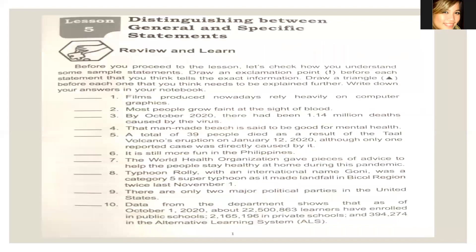Let's go to the next page. We are now in lesson five: distinguishing between general and specific statement. Before you proceed to the lesson, let's check how you understand some sample statements. Draw an exclamation point before each statement that you think tells the exact information — that is the specific statement. Draw a triangle before each statement that you think needs to be explained further — that means it's general, it's very broad.